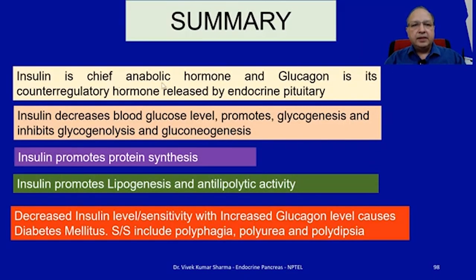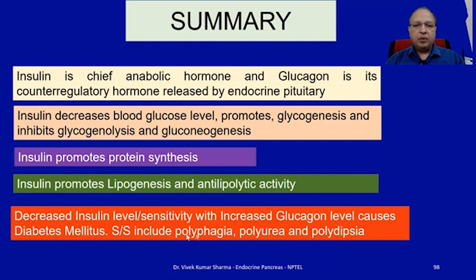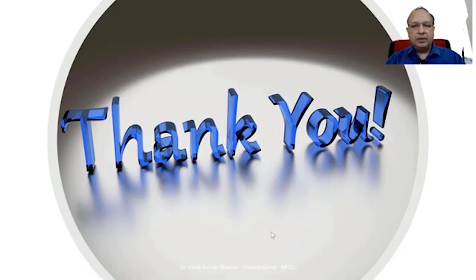To summarize: insulin is the chief anabolic hormone and glucagon is its chief counter-regulatory hormone. Insulin decreases blood glucose, promotes glycogenesis, inhibits glycogenolysis and gluconeogenesis, promotes protein synthesis, promotes lipogenesis, and mediates antilipolytic activity. Decreased insulin level or sensitivity with increased glucagon causes diabetes mellitus. Signs and symptoms of diabetes mellitus include polyphagia, polyuria, and polydipsia.